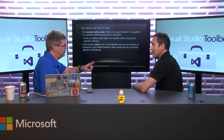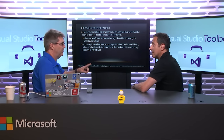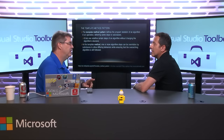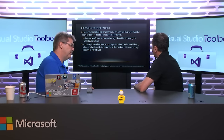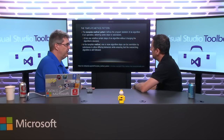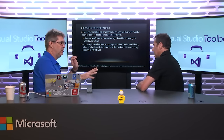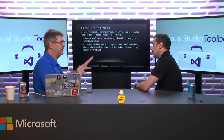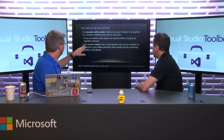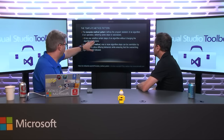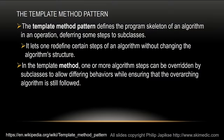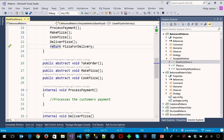Going back — they're actually brought in at design time, not runtime. Because we've got these classes built, we're not changing the implementation at runtime. We're defining the implementation at design time. At runtime we can pick a different style of pizza store. So again, we've got the program skeleton defined, and we're deferring some steps to subclasses — we've deferred the make pizza, cook pizza, and take order to a subclass.